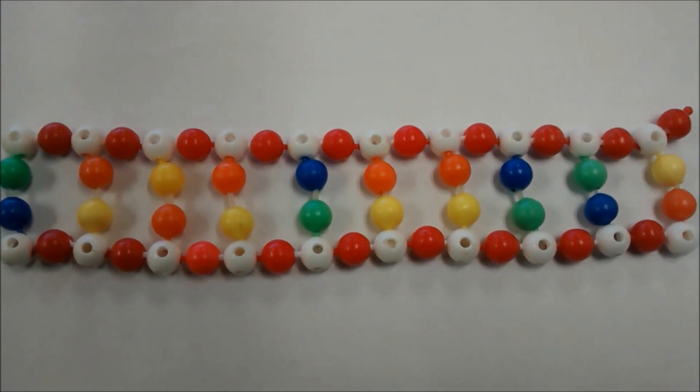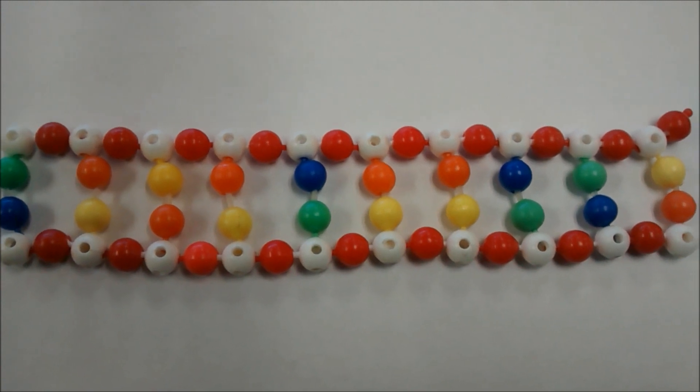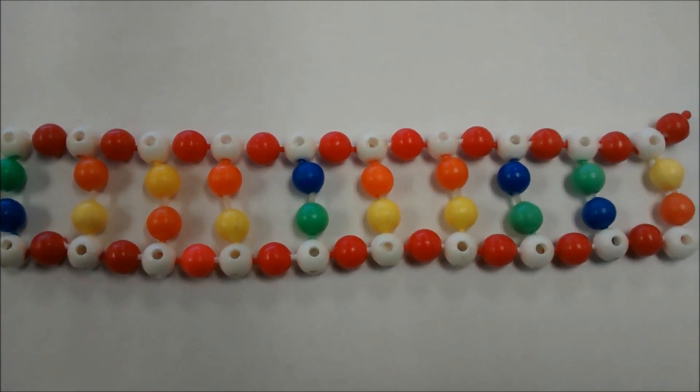The blue and the green represent guanine and cytosine, and the orange and the yellow represent adenine and thymine.